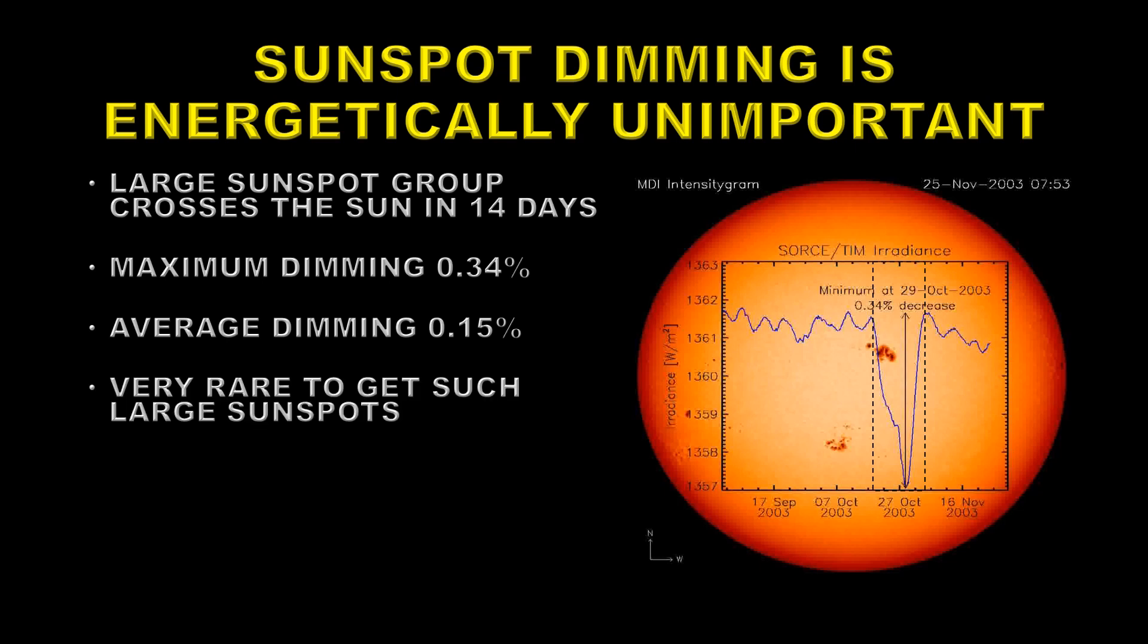However, it's very rare to get these large sunspots. For most of the cycle, you don't get them at all. And then when they're on the Sun, they're only there for a couple of weeks. So the average dimming over a cycle is going to be basically negligible.